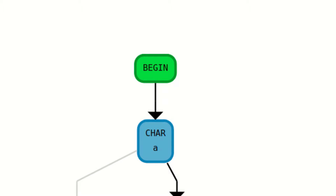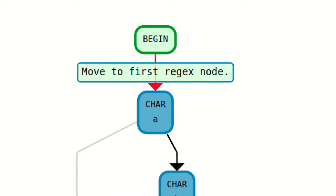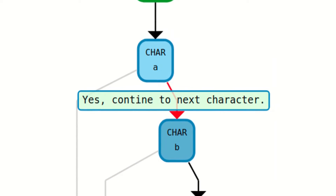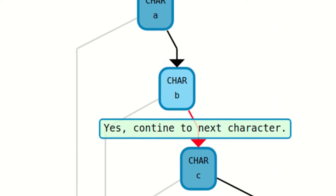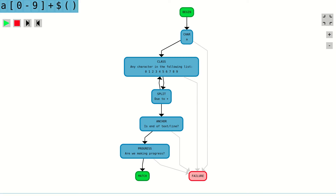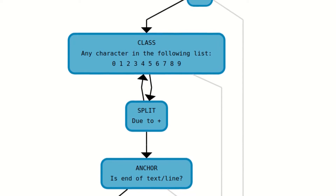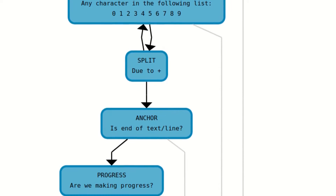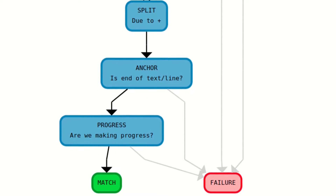The process of matching the regular expression starts at the begin node and continues by following the arrows to arrive at the nodes that actually do the work of the regular expression itself. At the time of creating this video, all regular expressions that this visualizer tool supports are ultimately transformed into a control flow graph that consists of the following five types of nodes.